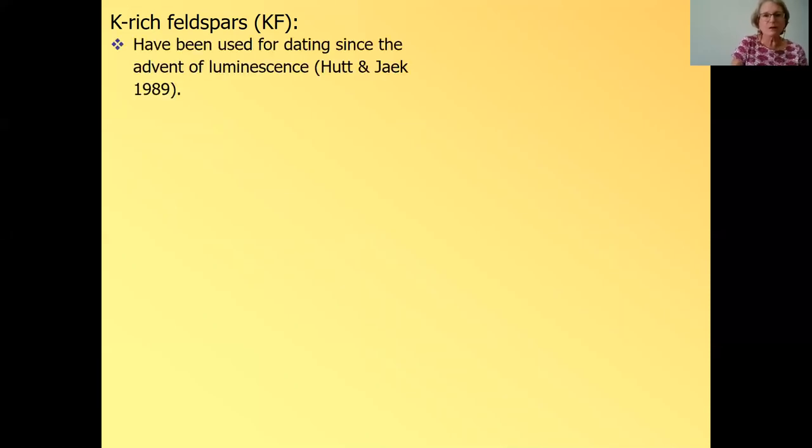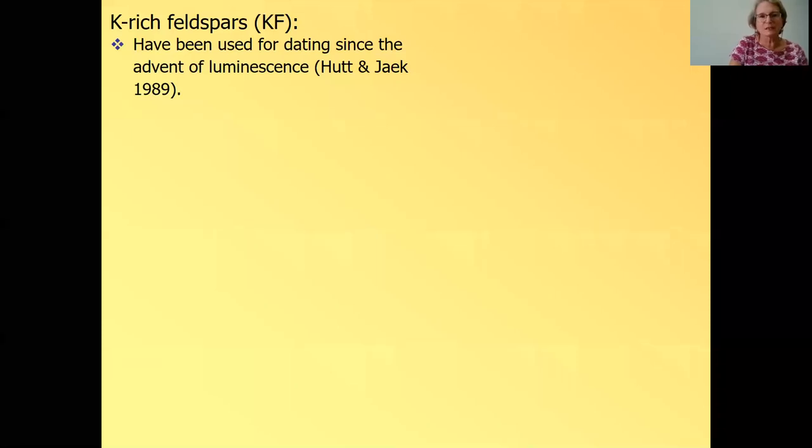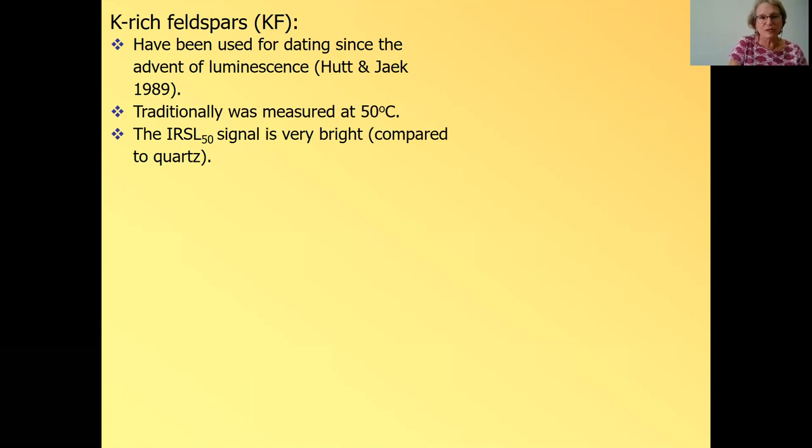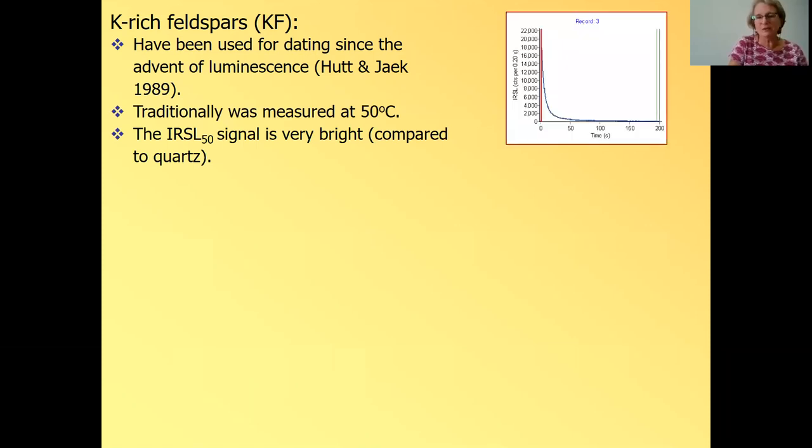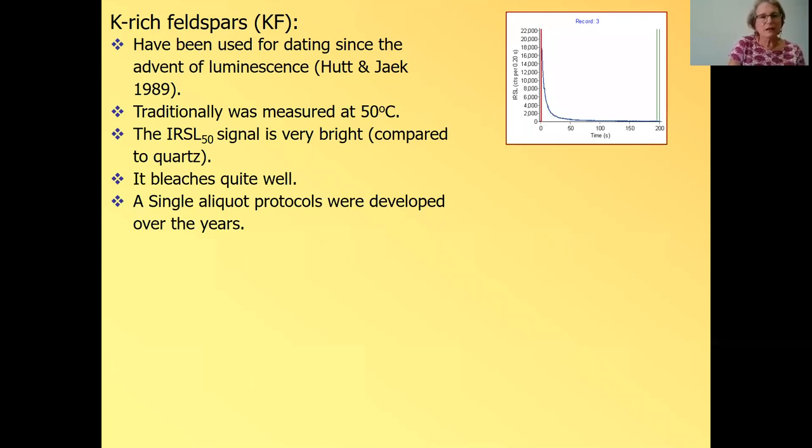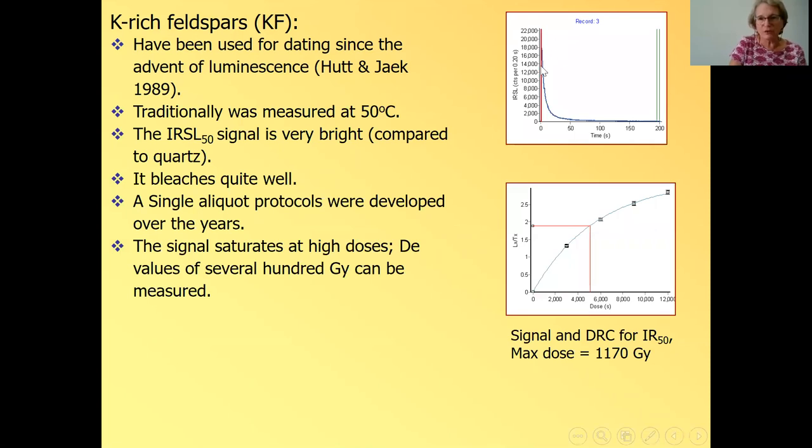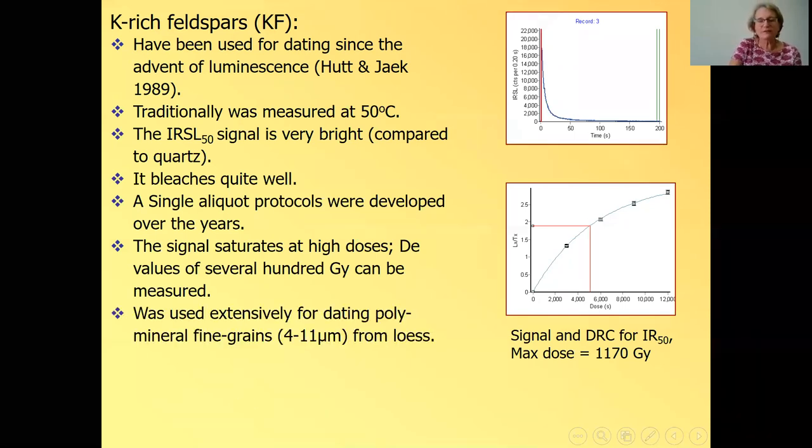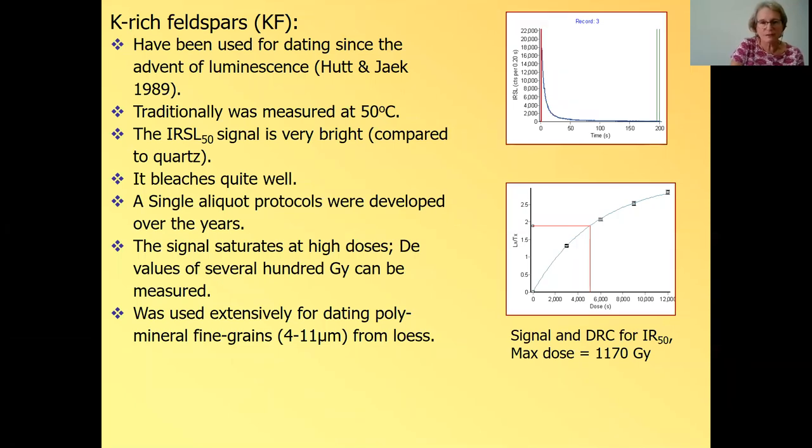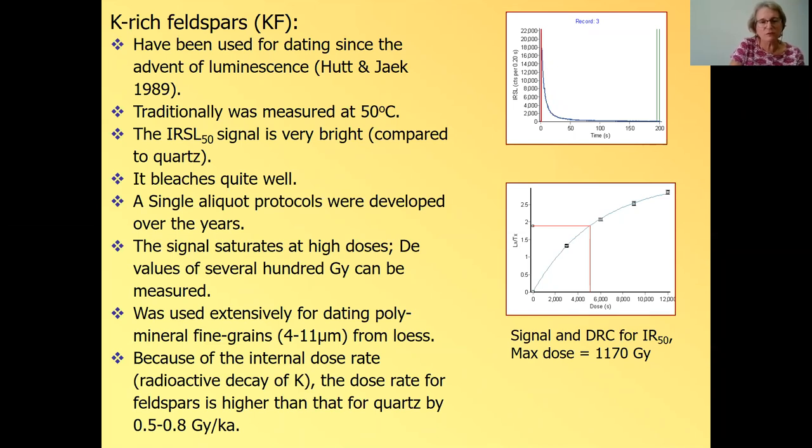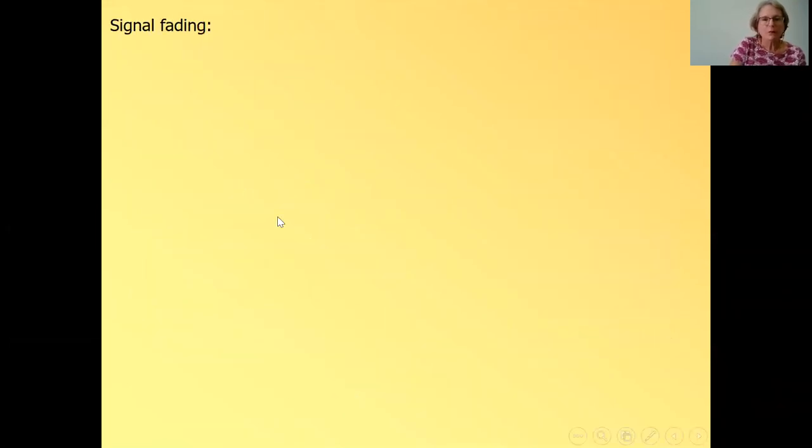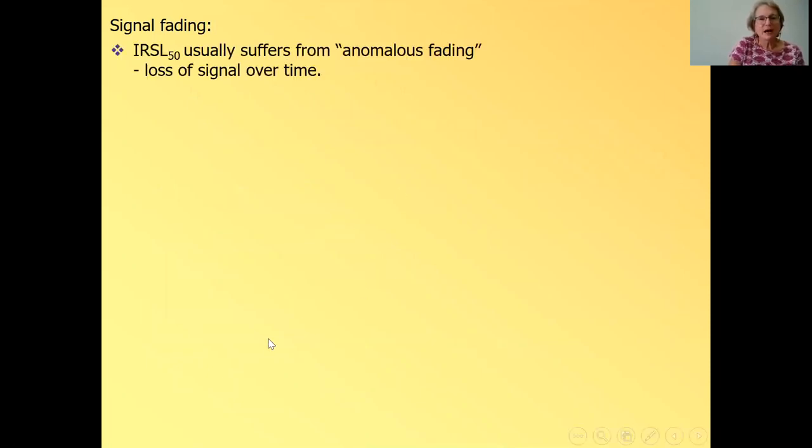Let's go to the second extended range signal that we want to talk about. And it is feldspar and it's been used for dating since the beginning of luminescence dating. And it was traditionally measured at 50 degrees. It's a very bright signal. When you compare it to OSL, many tens of thousands of counts, it bleaches quite well. We saw in the previous experiments, not as well as OSL, but not bad. Single aliquot protocols were developed over the years. It saturates at pretty high doses. You can see the dose response curve and it doesn't seem to saturate and the signal is bright. And it was used extensively for dating loess, polymineral fine grains in the past. Because the feldspars have also potassium inside the crystal, we need to take that into account. And the dose rate is a little bit higher than quartz. But we have a problem with the fading of the signal.